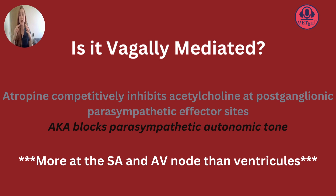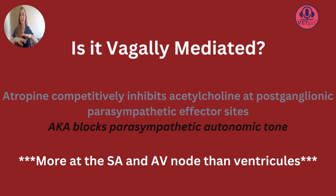There is a lot less parasympathetic nervous tone or innervation at the level of the ventricles, and this is a really good thing because if there were more tone, this would be a very dangerous drug to give. Essentially when you give Atropine, you're affecting everything that's supraventricular — you're not doing much at the ventricular level. And that's why ventricular tachycardia would be an extremely rare side effect of Atropine.